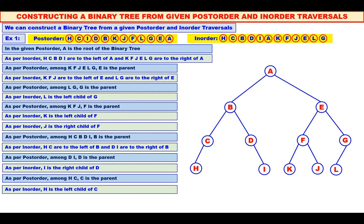This is our binary tree. We were given a post-order and we were also given an inorder. Alternatively, seeing the post-order and inorder with careful observation, we constructed a binary tree — quite easy, quite simple.